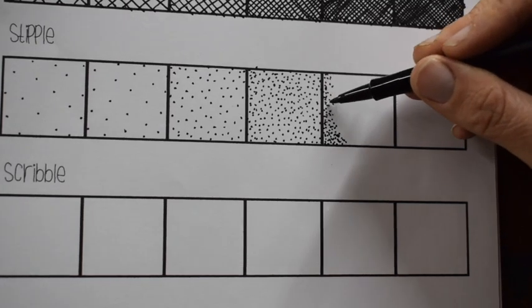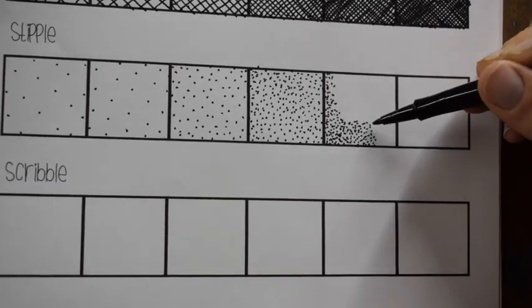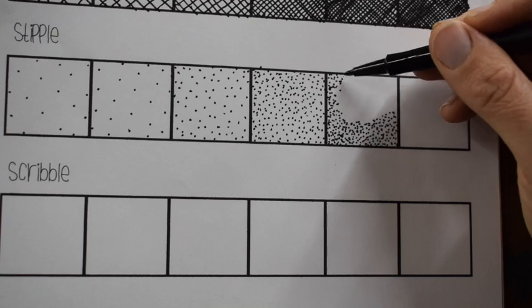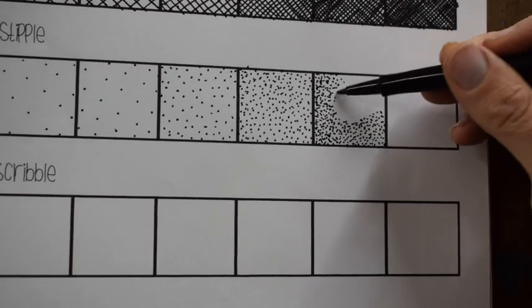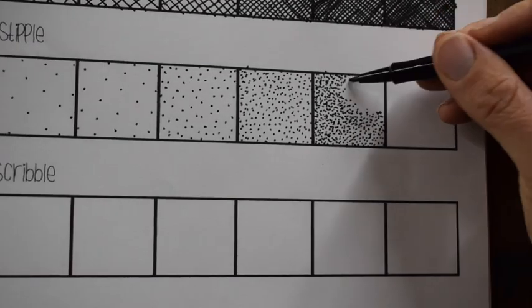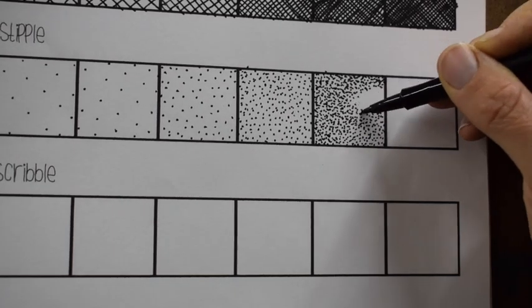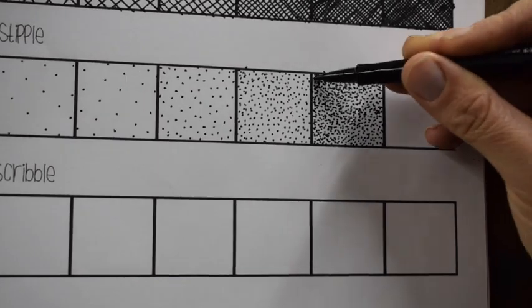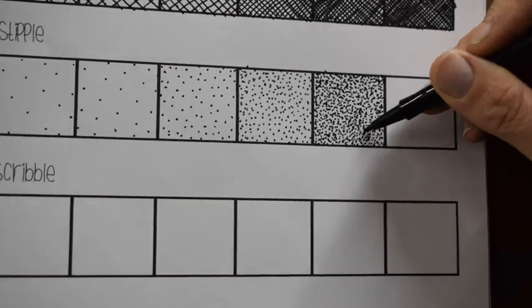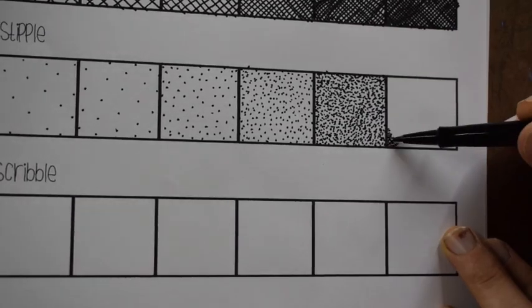I'll show you some examples but it does take a lot of time and it's meticulous work. I am requiring you to get darker as you move to the right. So again that last box, the one that you can see up on the screen right there, that has to be more black than white.